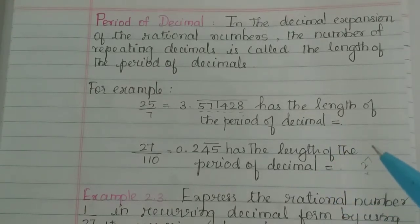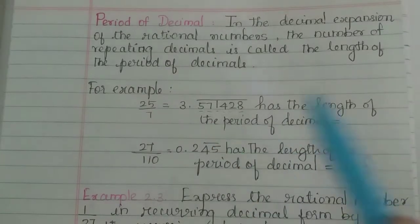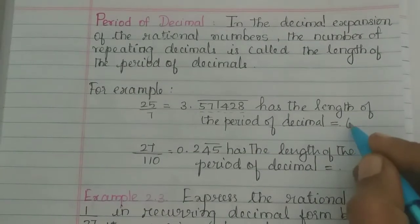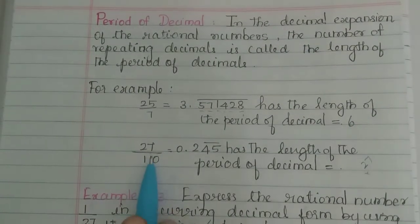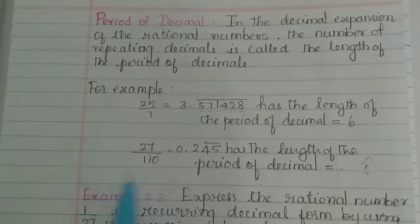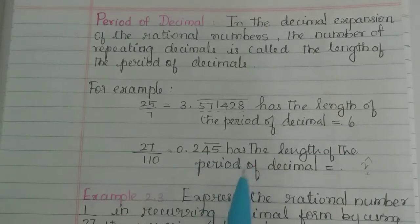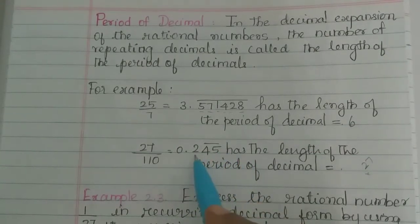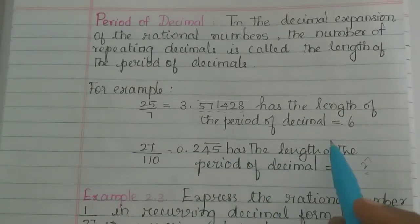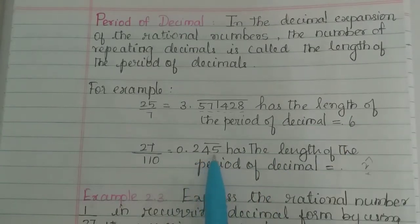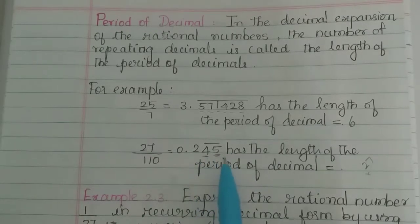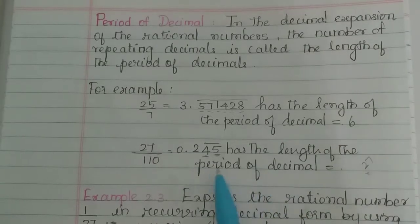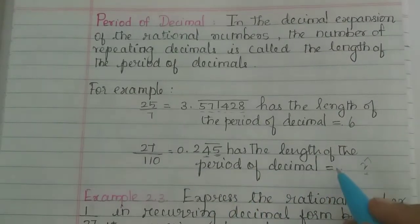The decimal name is length of the period of decimal. So what is the period of decimal here? It is 6. Now if you divide 27 by 110, 0.2454545... is repeated, so 45 is repeated. That means two numbers are repeated, so the length of the period of decimal is 2.